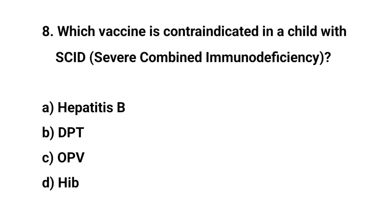Question No. 8. Which vaccine is contraindicated in a child with SCID (Severe Combined Immunodeficiency)? The right answer is C: OPV (Oral Polio Vaccine).